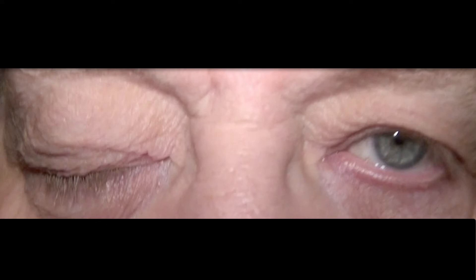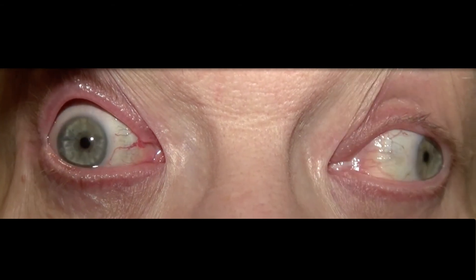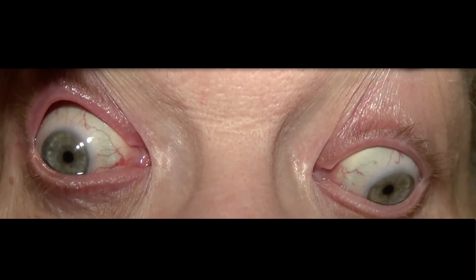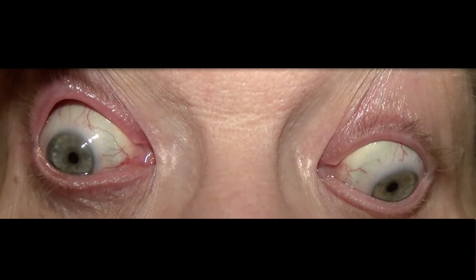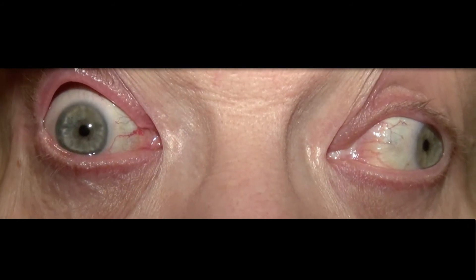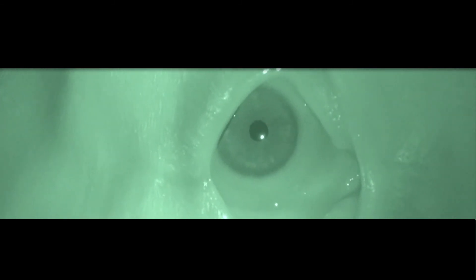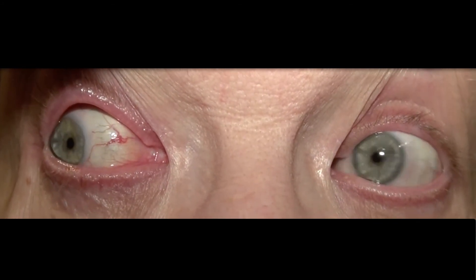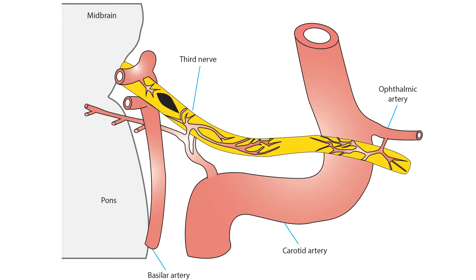This patient has complete right upper lid ptosis and cannot adduct, superduct, or infraduct her right eye. Abduction and intorsion of the right eye are intact, and the left eye moves normally. Pupils are equal in size and both constrict normally to direct light — a pupil-sparing right third nerve palsy. The cause was presumed microvascular ischemia, and she recovered spontaneously within eight weeks. The damage usually resolves completely within three months, and such ischemic lesions are not visible on any form of brain imaging.